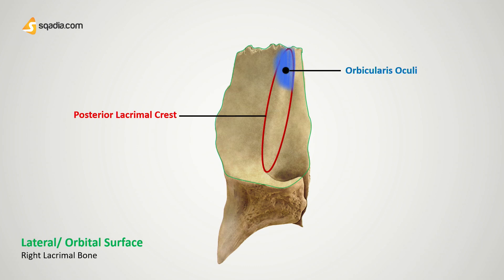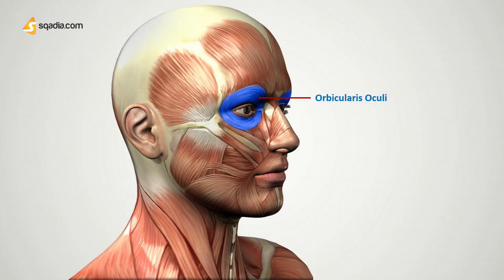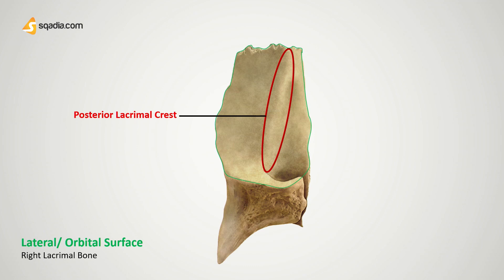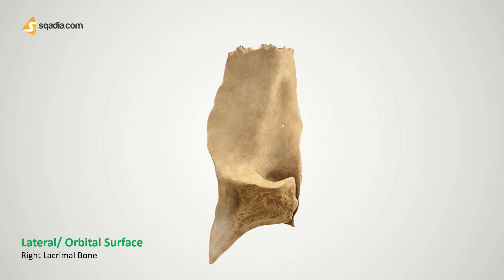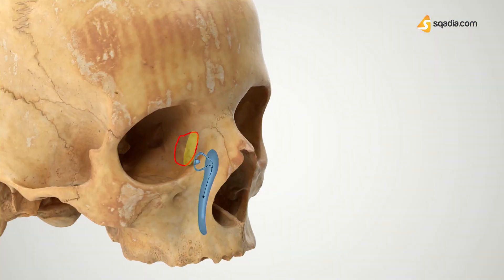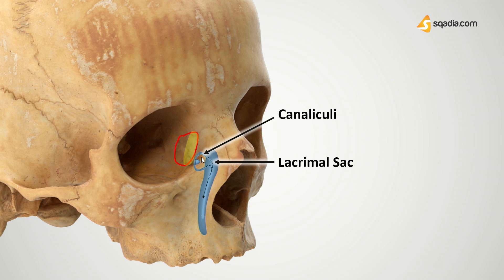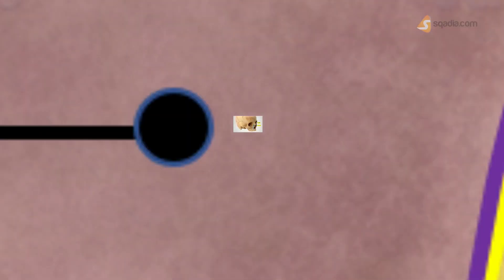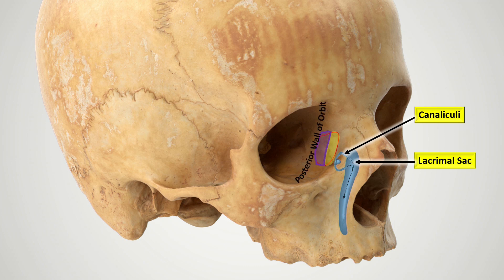The orbicularis oculi muscle helps in the closure of the eyes since it surrounds the eyelids and basically goes down towards our cheeks. This orbicularis oculi muscle is the only muscle reported in literature to find attachment on the lacrimal bone. Basically this crest divides the lateral surface into two portions: the anterior part, which is grooved, and the posterior part, which is flattened.